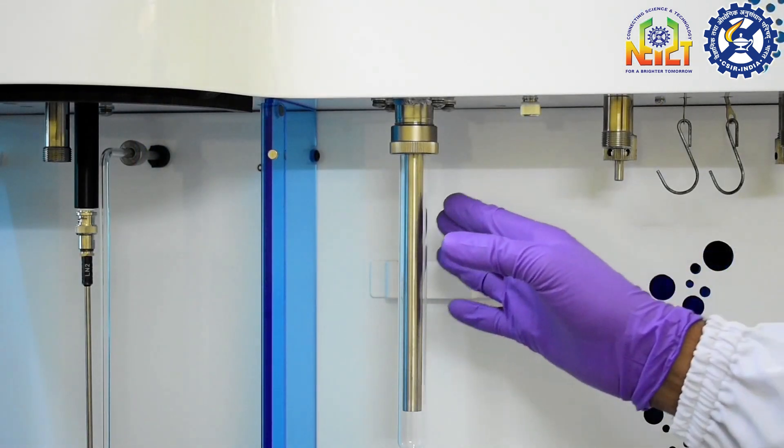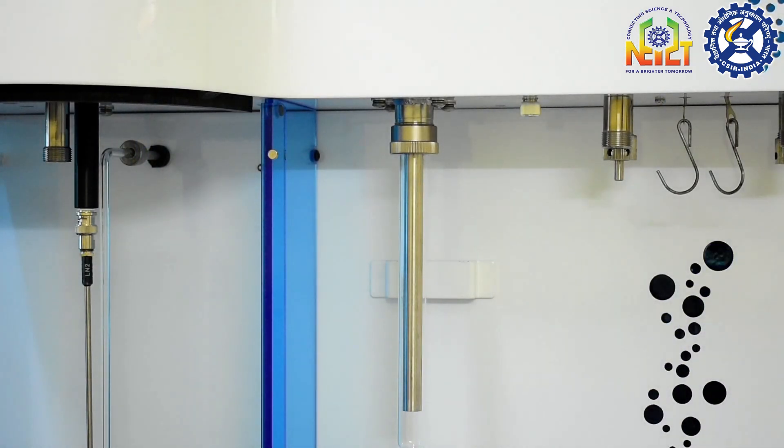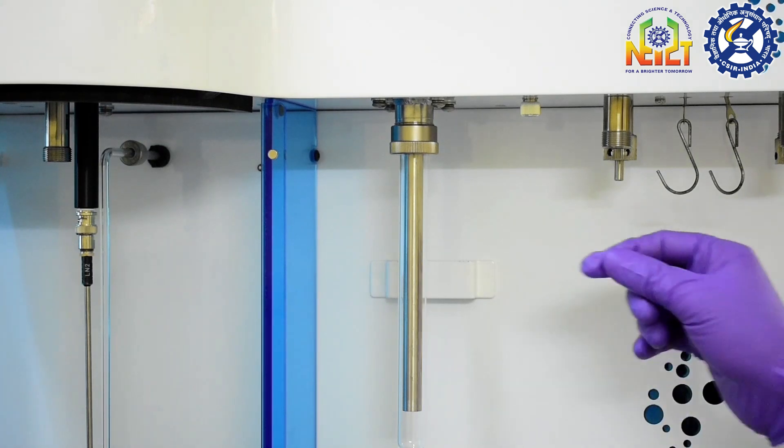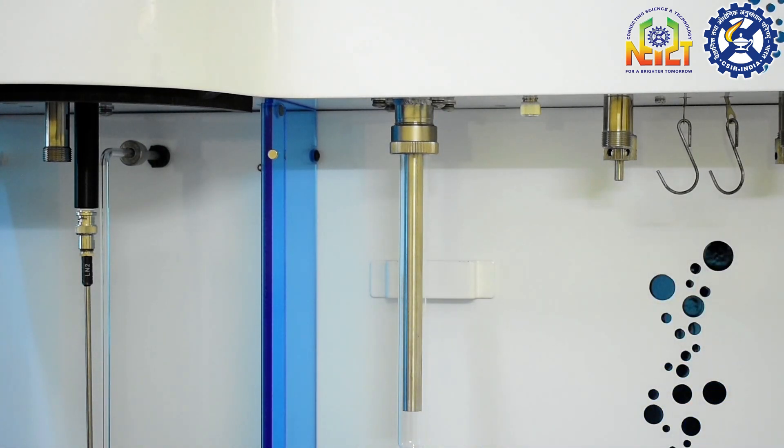A cold trap is used to permit continued removal of condensable products of degassing even when heated samples are not connected to active vacuum. And it also prevents diffusion of condensable vapors into the degas manifold.